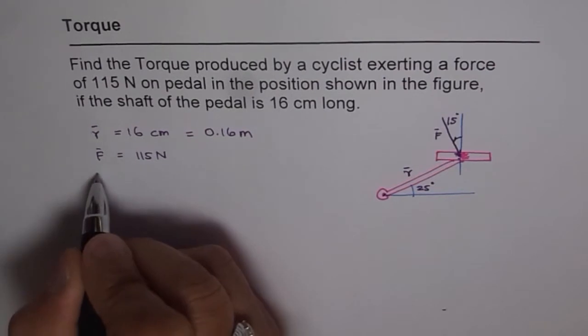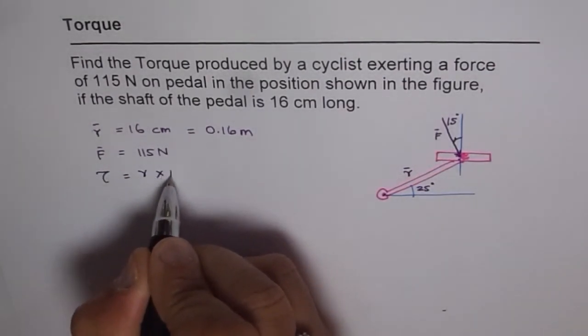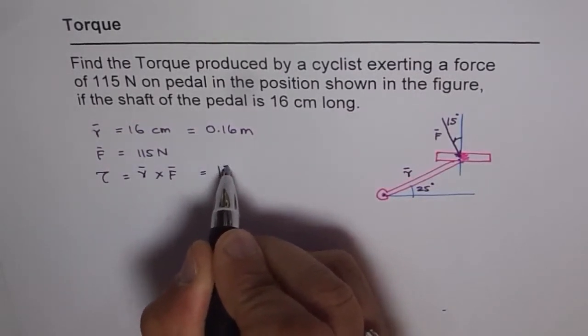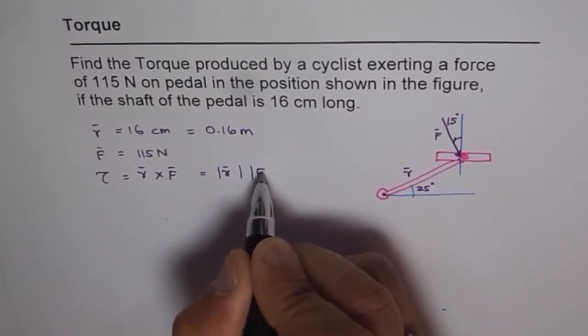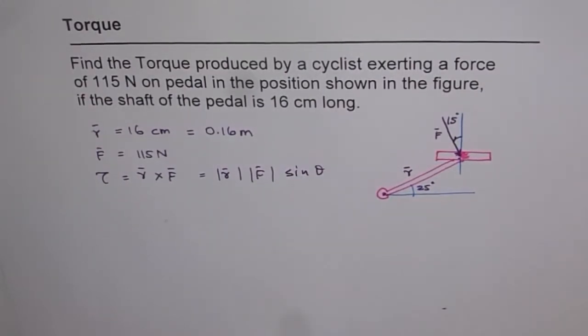Now torque is cross product of R and F. Which really means magnitude of R times magnitude of F times sine of theta. Where theta is the angle between R and F.